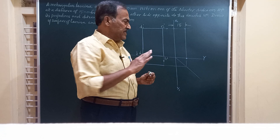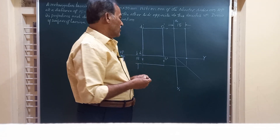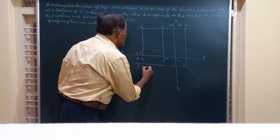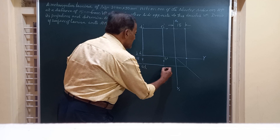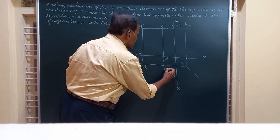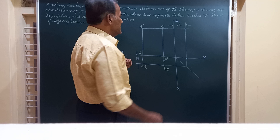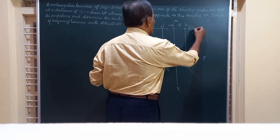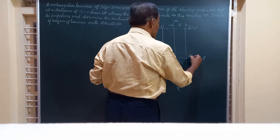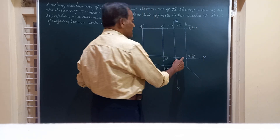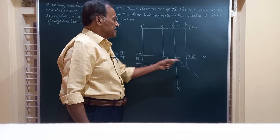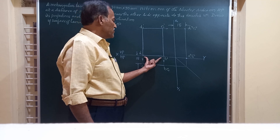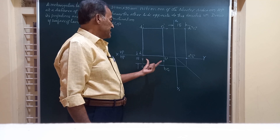In the top view you will have this as A-D. In the end view this is going to be A1 double-dash, C1 double-dash, D1 double-dash, A double-dash, B double-dash. Since the position of the shorter edge is fixed, mark it as A double-dash, B double-dash. Also in the top view it is A-B, and in the front view it is A-dash, B-dash.